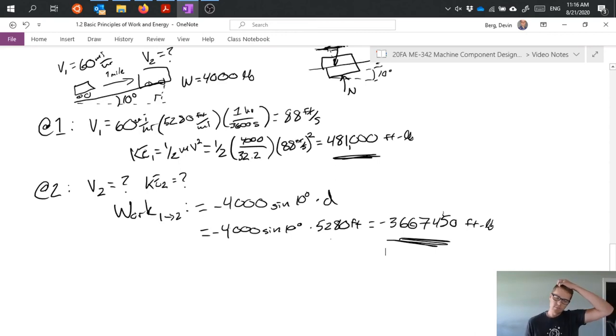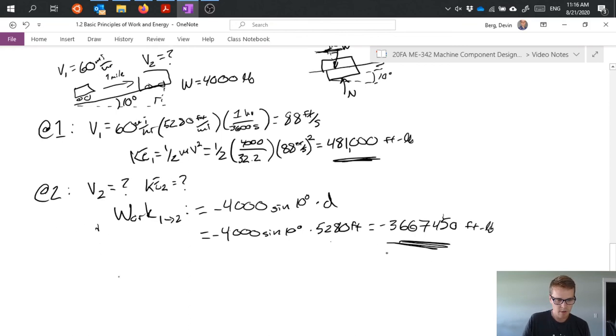So, that doesn't really do anything for us. So, we can go ahead and say, well, what we've learned is that the kinetic energy actually goes to zero. So, our kinetic energy, KE2 is equal to zero. And it doesn't occur at that mile. It occurs somewhere earlier, but we can figure out where it happens. So, we can go ahead and say, well, the kinetic energy at position two is going to be equal to the kinetic energy at position one plus the work from position one to position two. Now, we've redefined position two just to mean wherever the car stops. So, if we put in our numbers, we have that 481,000 plus the work from position one to position two.